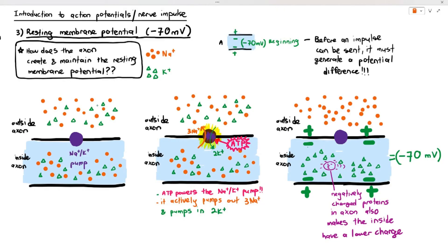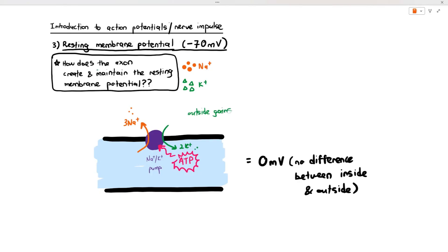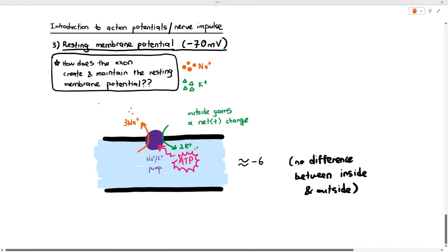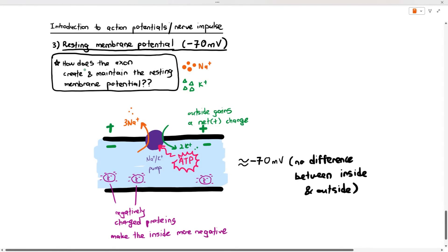To summarize: at first there is no charge difference between the inside and the outside — zero millivolts. With the help of the sodium ion-potassium ion pump, when it receives ATP, it actively pumps out three sodium ions and pumps in two potassium ions. Therefore, the outside gains a net positive charge: three minus two equals one net positive charge gained outside. So there will be a charge difference between the two areas — for example, negative 60 millivolts.